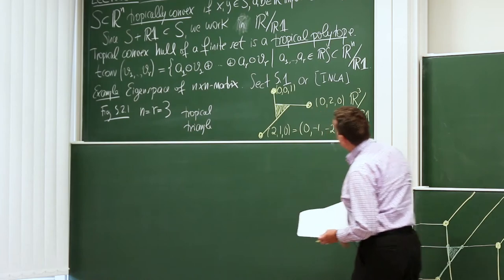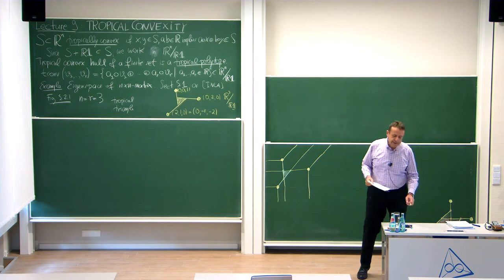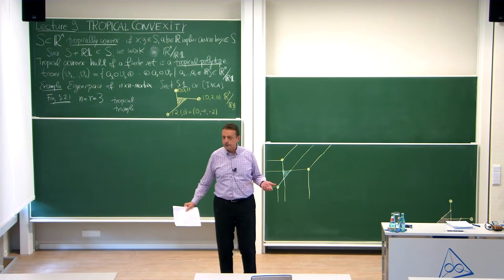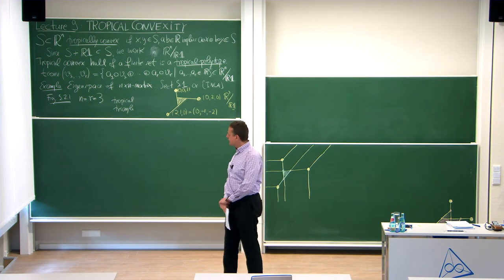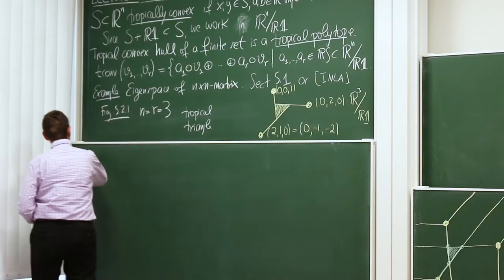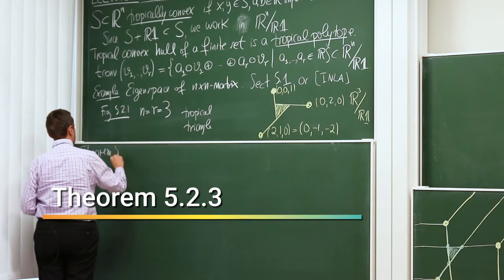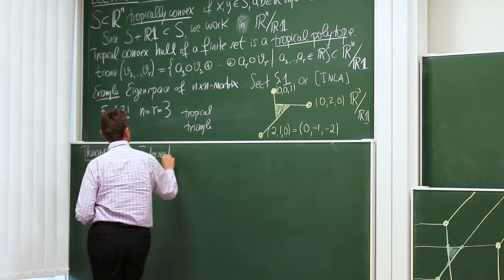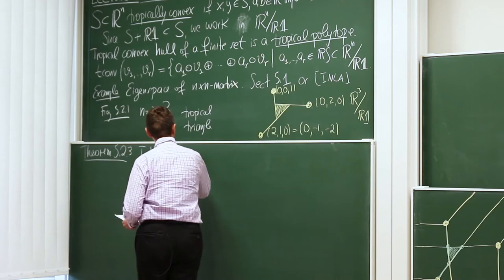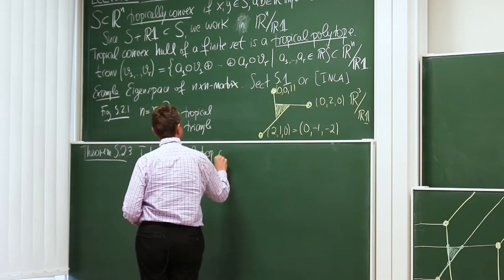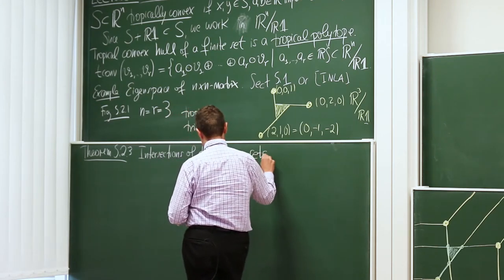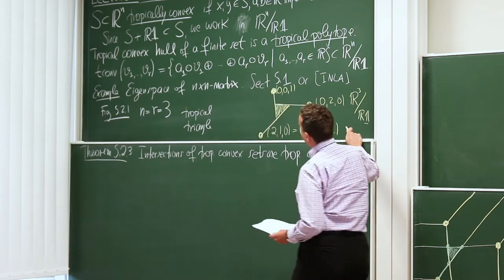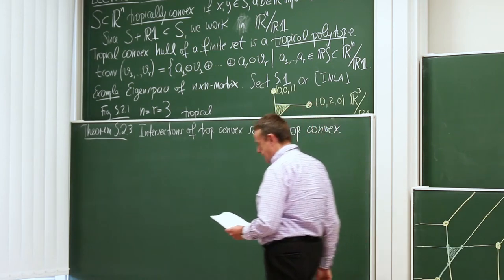That's how you draw a triangle in the plane. You start by taking line segments. If you have two points in the plane, they span a unique line, and there's an obvious line segment between them on that line. Now, theorem 5.2.3 has several statements — some easy, some less easy. First: intersections of tropically convex sets are also convex. This is relatively straightforward from the definition.